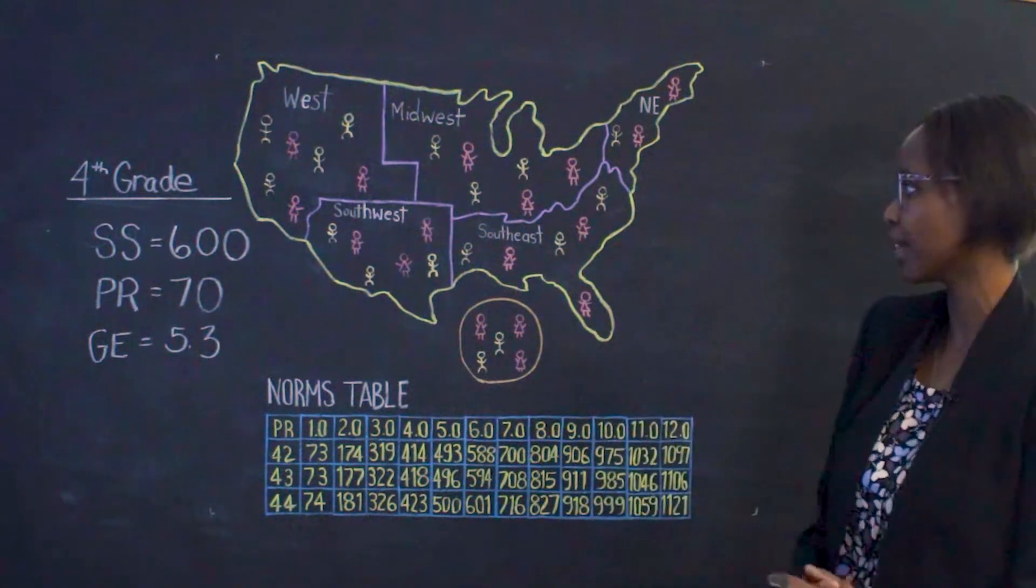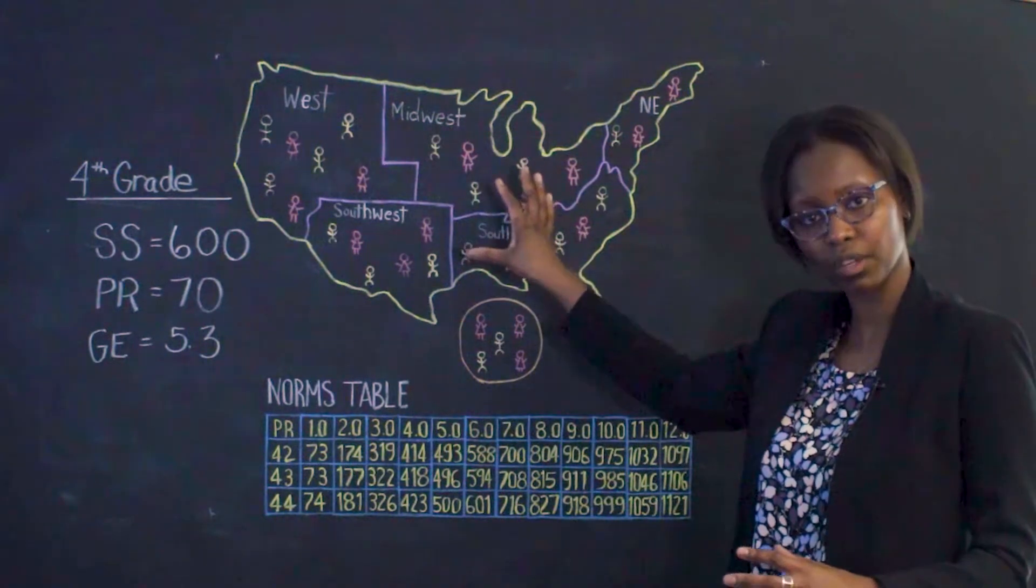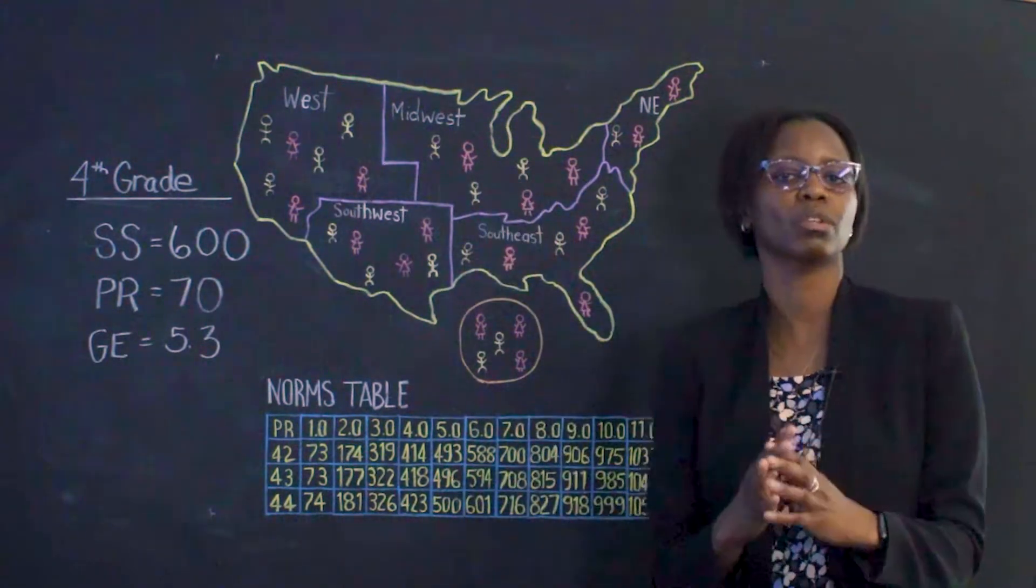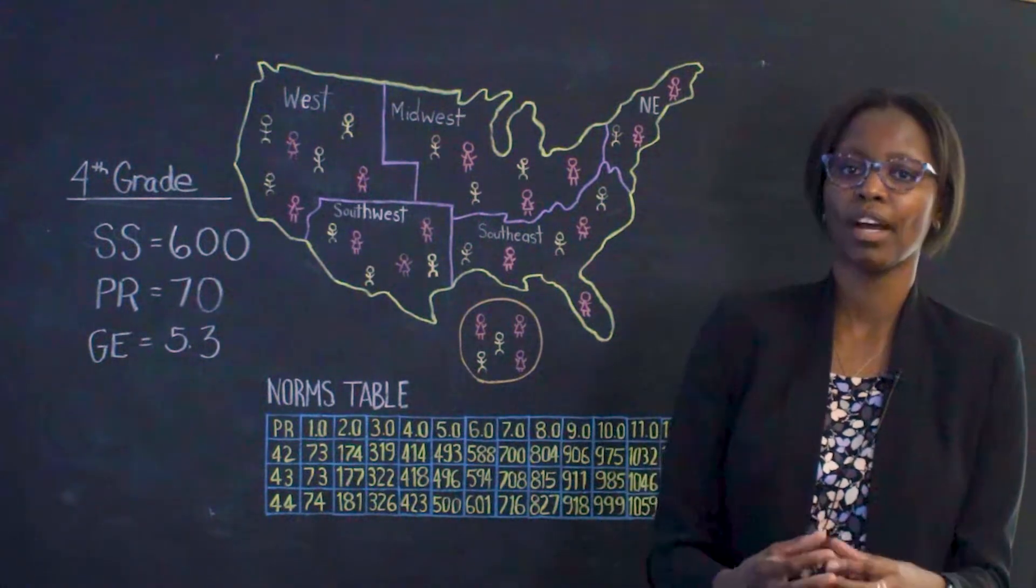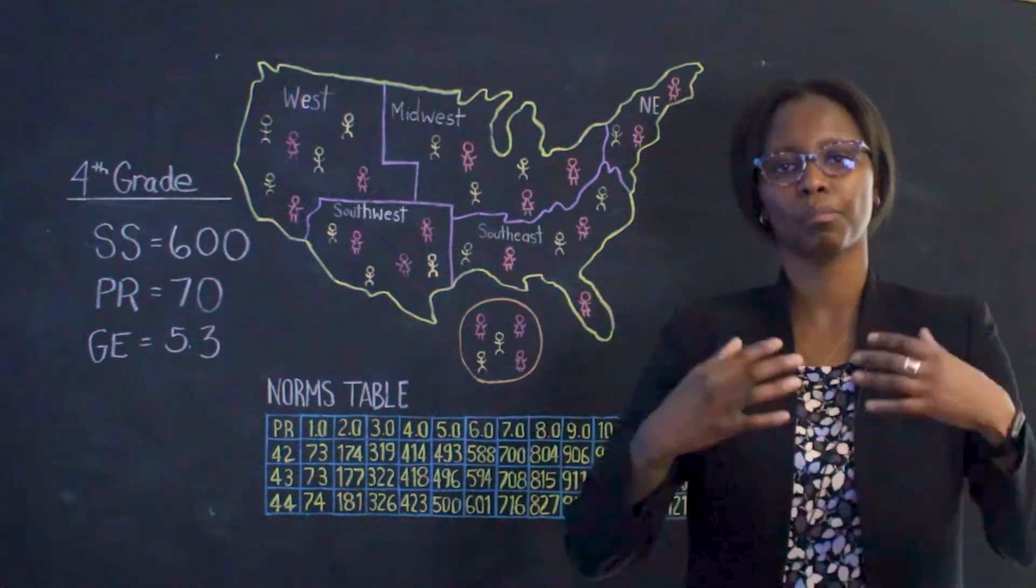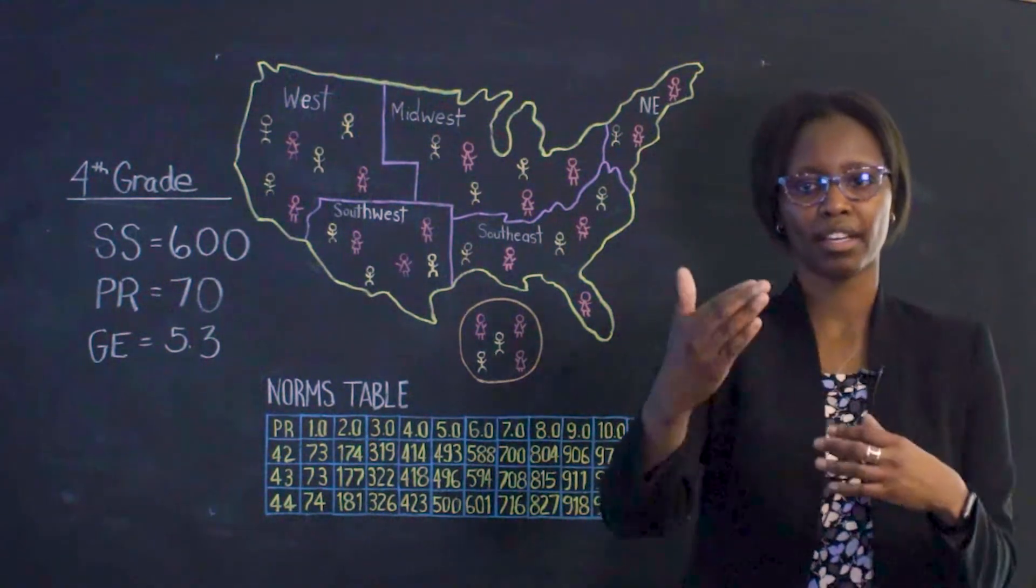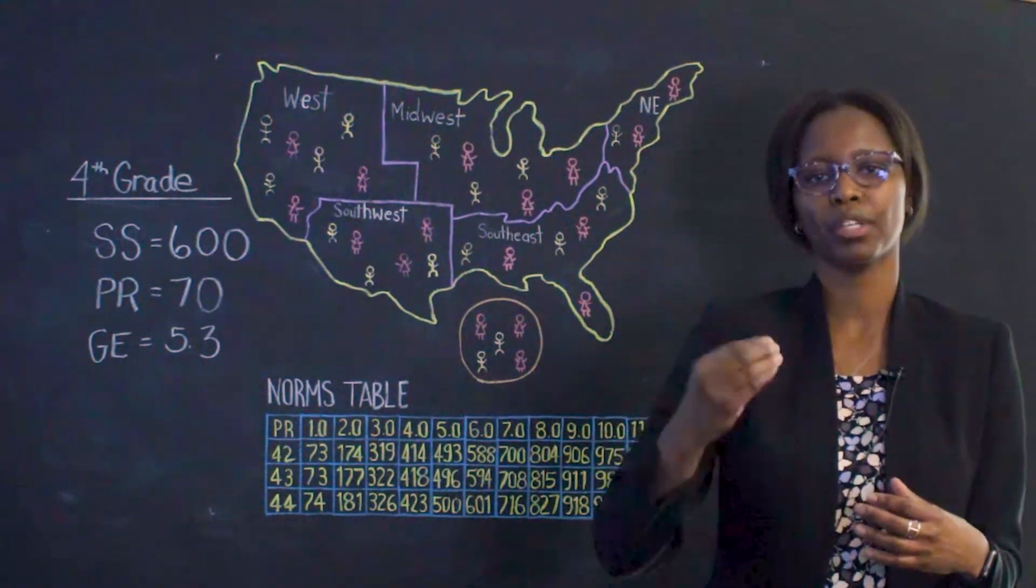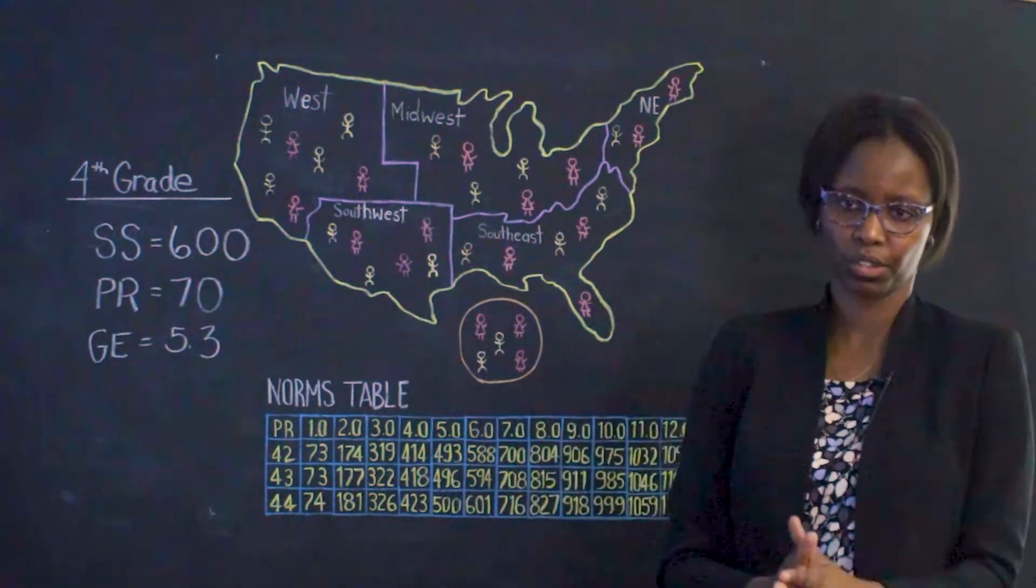Once we're satisfied with a sample that is a good representation of all the students, we take their scores and summarize them into statistics by grade level and month of the school year to help us compare students with other like students. So, looking at that score will help you interpret it in terms of other students who are also similar to this student.